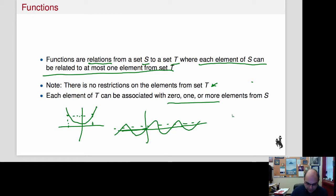What we don't want is to have something like this, where you have one value of X associated with two different values of Y. That's what's not allowed.